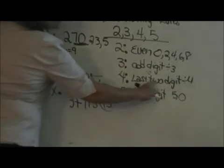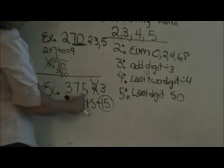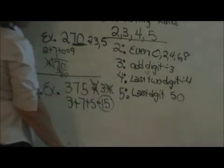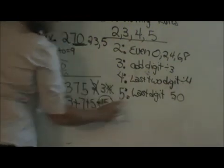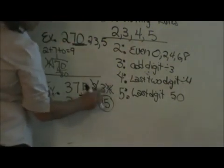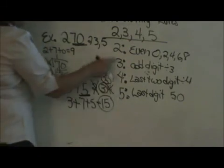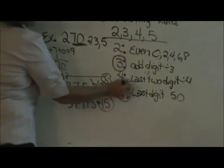Are the last two digits divisible by 4? I can immediately say no, because it's not even. Therefore, 4 is not one of its factors. And for the rule of 5, the last digit is a 5, so that means it is divisible by 5. So the two factors out of 2, 3, 4, and 5 are both 3 and 5.